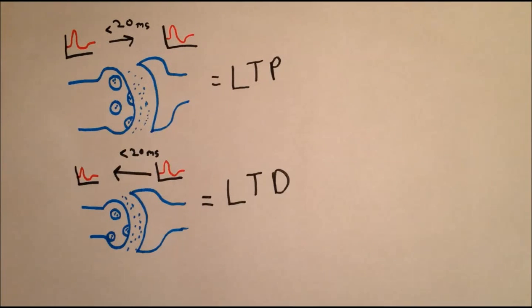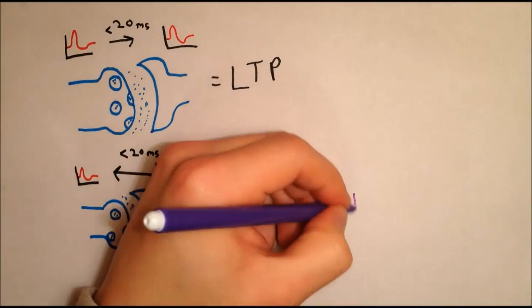This is known as spike-timing-dependent plasticity, and we can alter the initial Hebbian hypothesis to include these new findings. If the presynaptic neuron fires within a window of 20ms before the postsynaptic neuron, the synapse will be strengthened. However, if the presynaptic neuron fires within a window of 20ms after the postsynaptic neuron, the synapse will be weakened. But how does this happen?